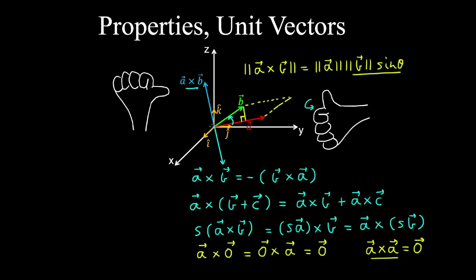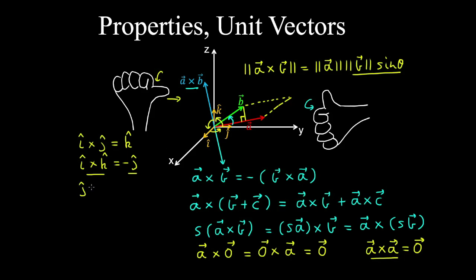Using the right-hand rule, we can visualize the cross products between the unit vectors: i cross j is positive k, and i cross k is minus j. If you curl the fingers of your right hand from k to i, your thumb points in the positive y direction. Taking the cross product in reverse gives the vector pointing in the opposite direction. Similarly, j cross k gives positive i, and the cross product between each unit vector and itself is zero.